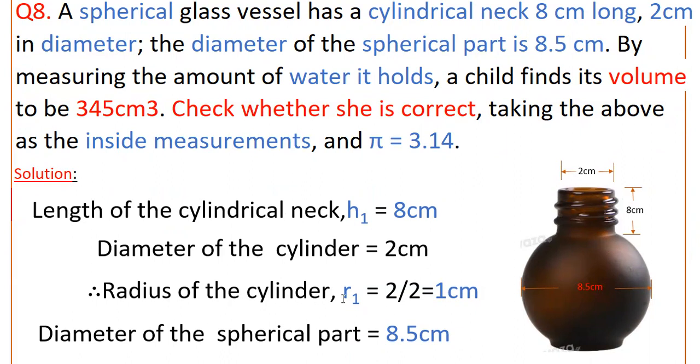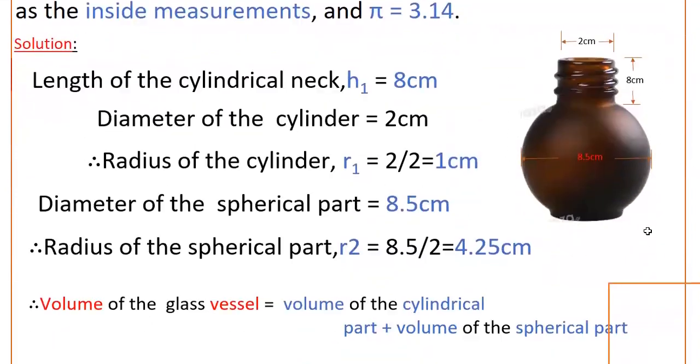Therefore, radius of the cylinder r₁ equals diameter by 2, that is 2 by 2, that is equal to 1 cm. And diameter of the spherical part is given as 8.5 cm. Therefore, radius of the spherical part r₂ equals 8.5 by 2, that is 4.25 cm.